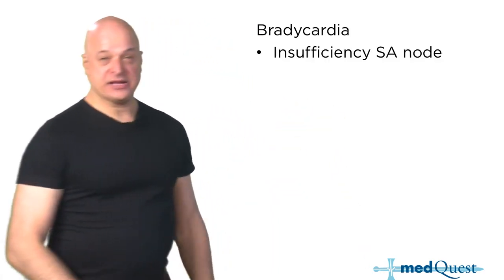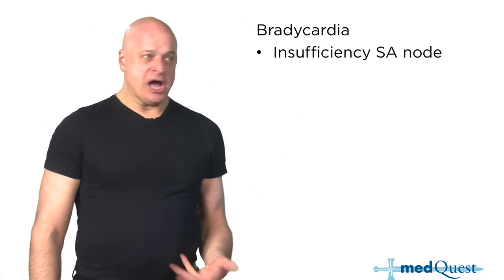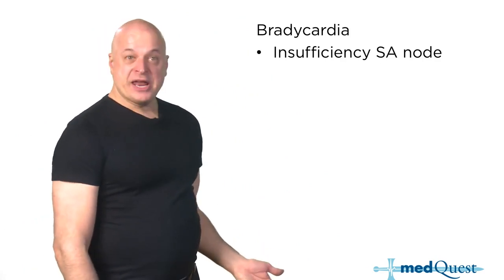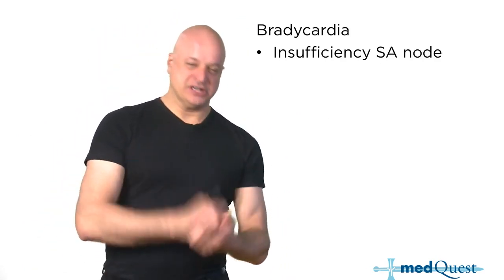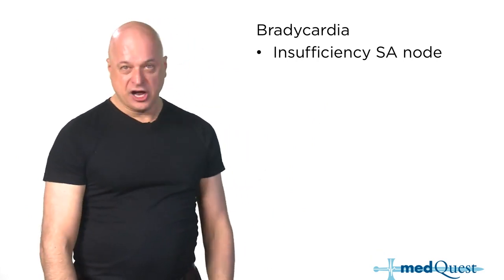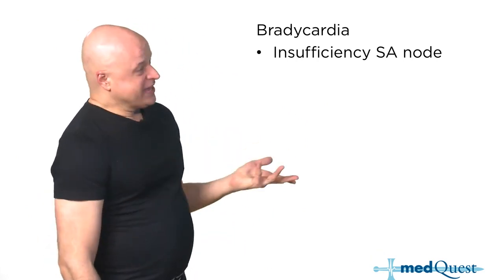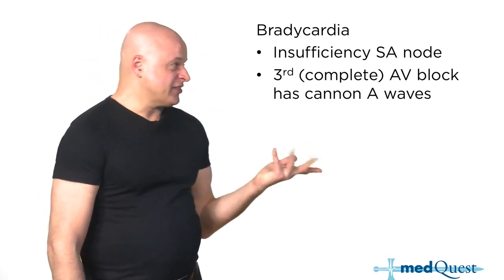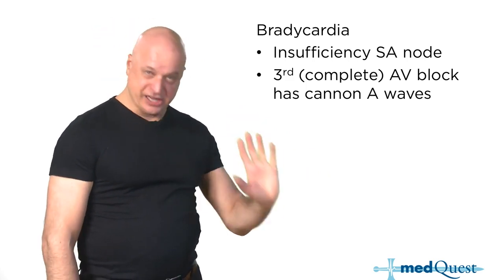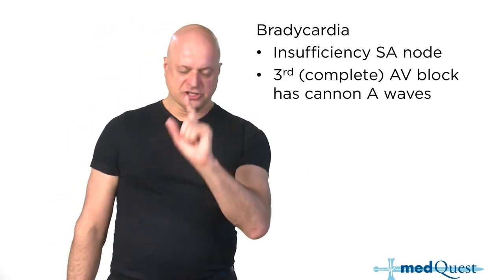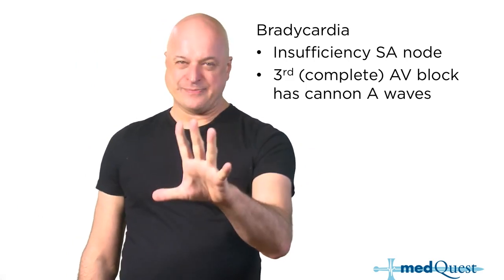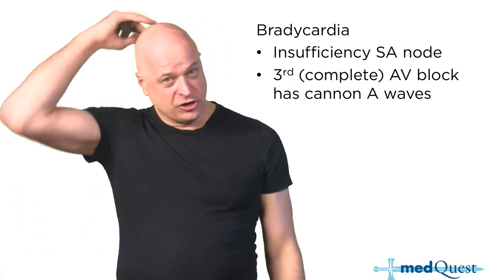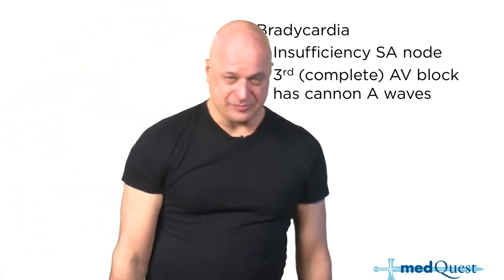What's the order for bradycardia management? It mostly depends on whether there are symptoms. Symptomatic bradycardia: atropine, transcutaneous pacemaker, transvenous pacemaker if not resolved. Asymptomatic bradycardia gets nothing. Sinus bradycardia gets nothing. First degree AV block gets nothing.